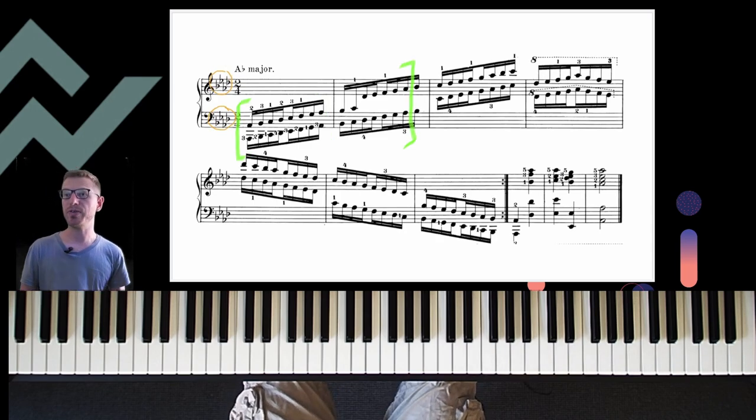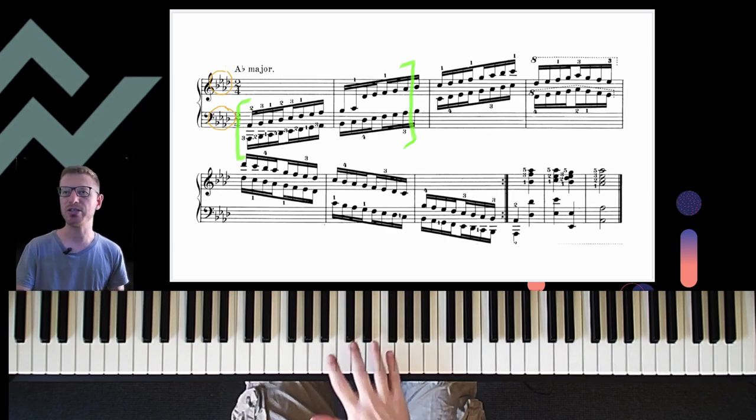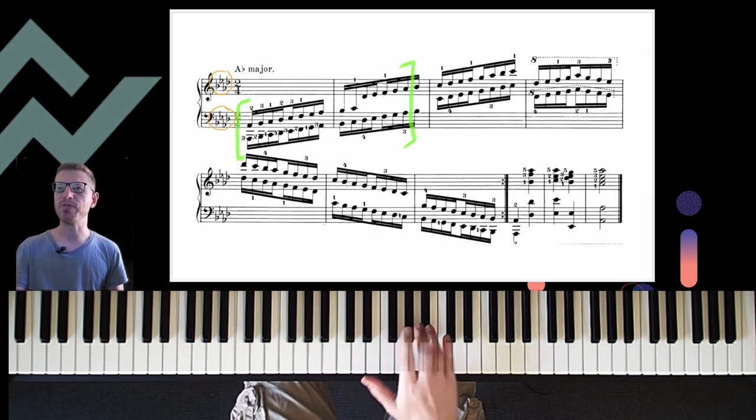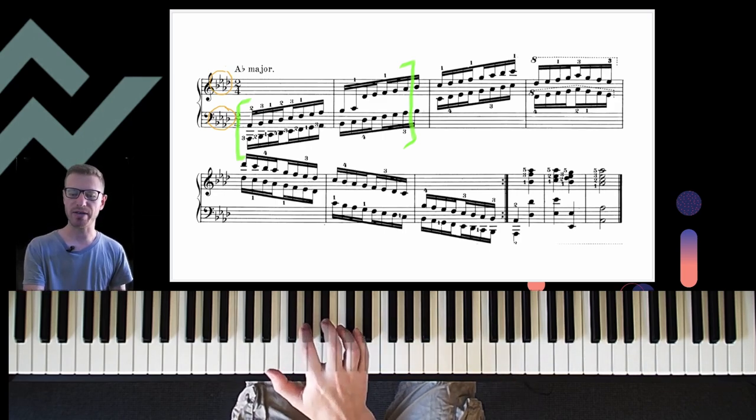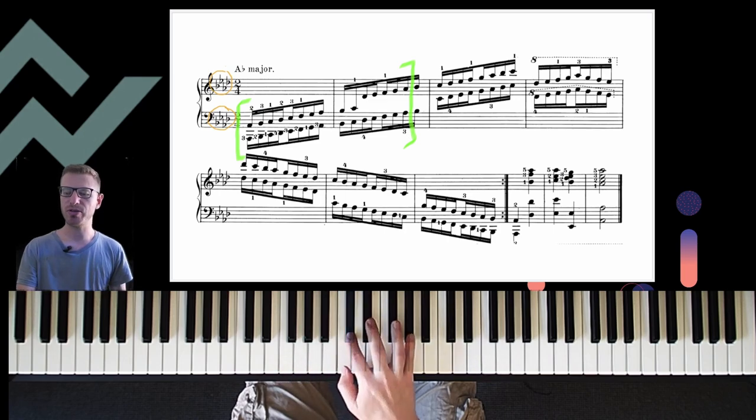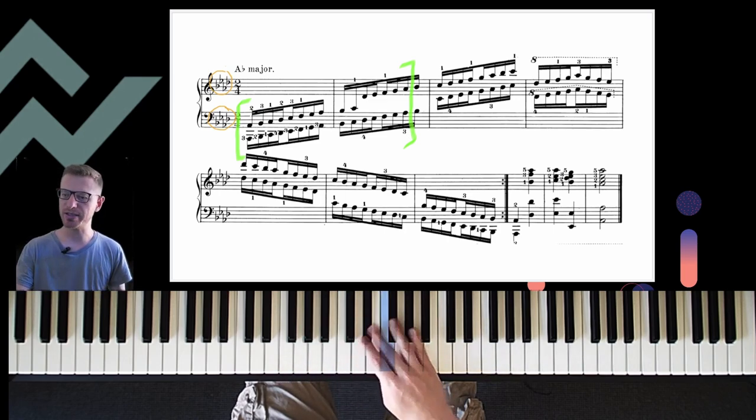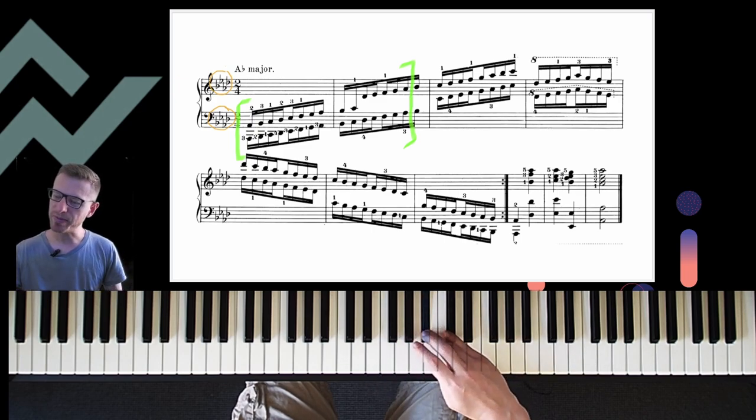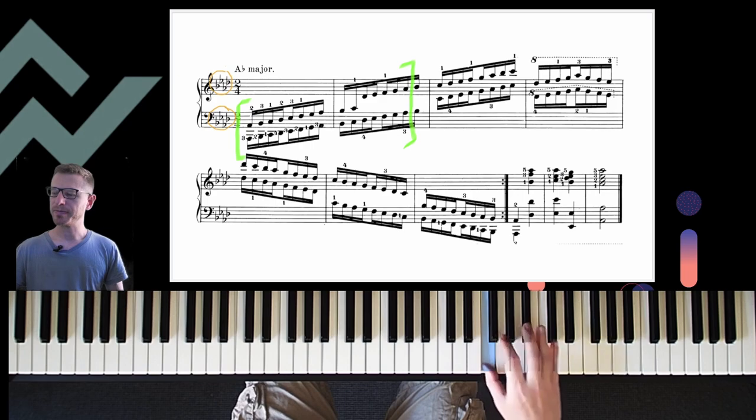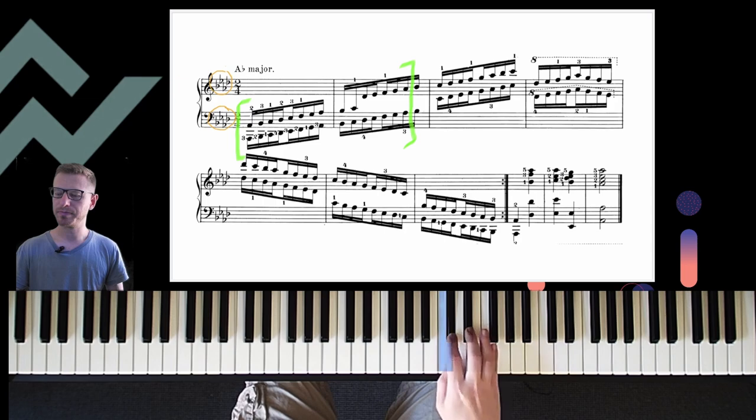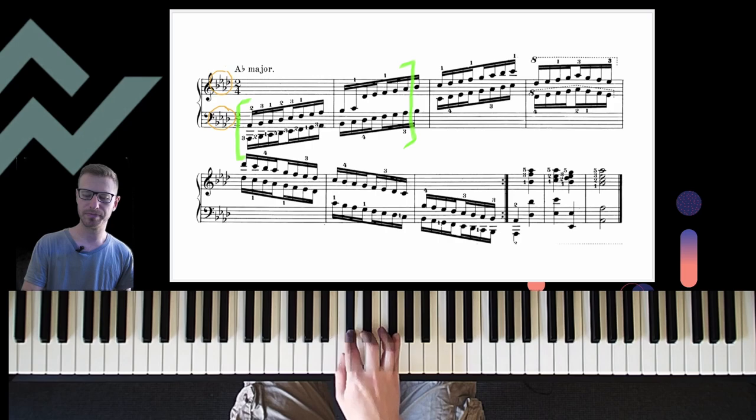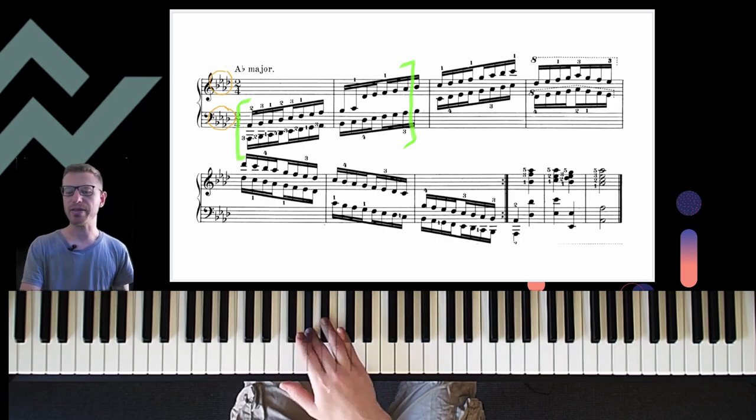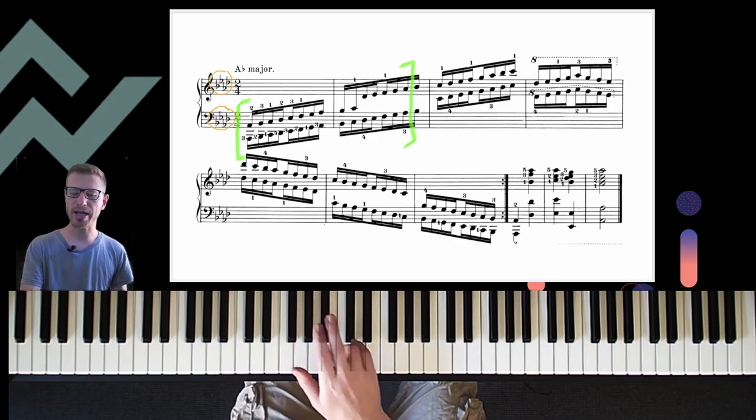For two octaves we'll be copying those fingers with one exception. When we get to the top for the right hand we will be adding our fourth, so our thumb is on C. Let's have a look at that. First right hand two octaves, starting with two and three. Two and three on D-flat and E-flat. Now four so that my thumb ends on D. Four again.